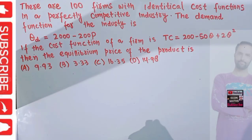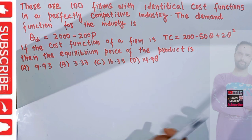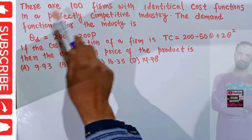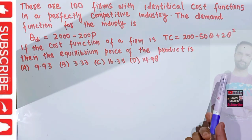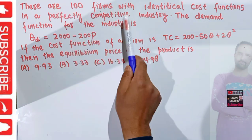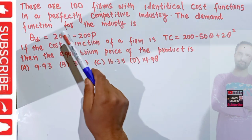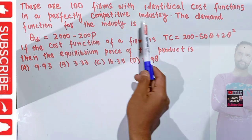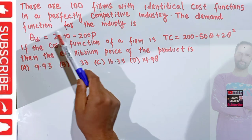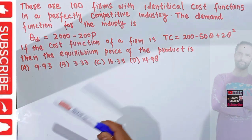In this video we will solve a problem on how to find the equilibrium price of a product when the industry demand function and individual firm's supply function is given. This question was asked by a brother on the Telegram channel of Econ Maths. There are 100 farmers with identical cost functions — each firm has the same cost function — in a perfectly competitive industry. The market demand function for the industry is given as QD = 2000 − 200P, where P denotes the price.